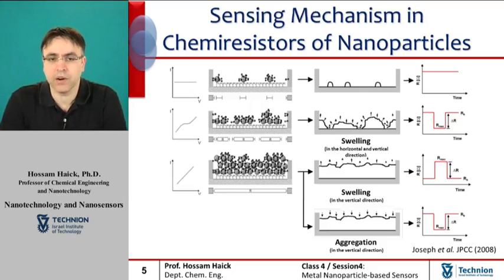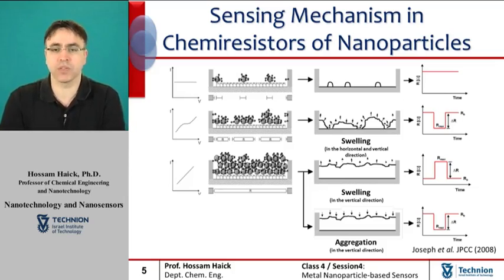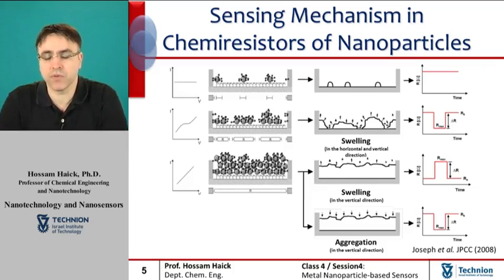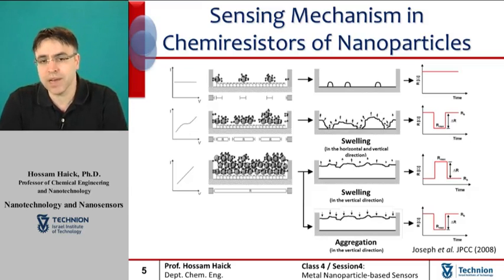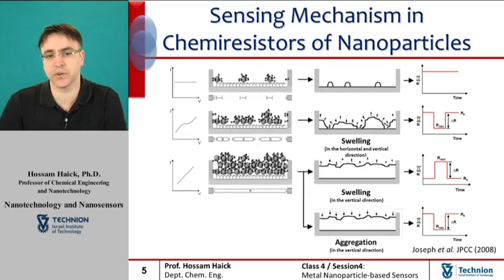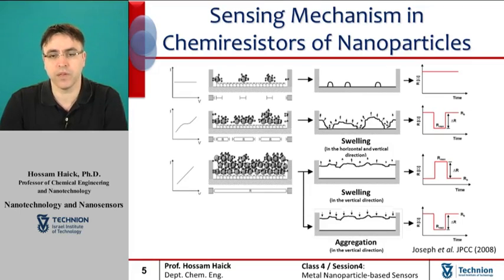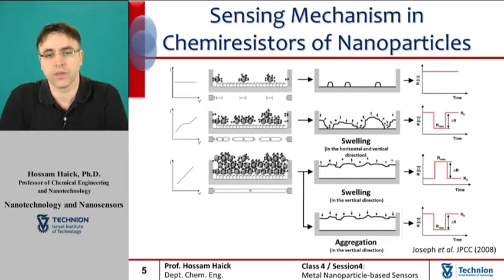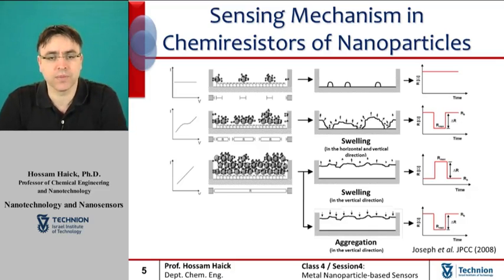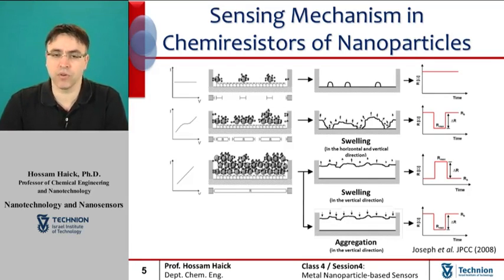Another parameter that has a critical effect on the sensing results of nanoparticle-based sensors relates to the film's morphology. We might roughly divide the morphology effect into three different scenarios. In the first scenario, the nanoparticle-based chemoresistor contains only a small number of nanoparticles, as illustrated in the upper image on the screen, with no percolation pathway connected between the electrodes. In this case, there is no direct linkage between adjacent nanoparticles, and therefore no current passes through the nanoparticles from one electrode to the other, resulting in very high resistance and poor response to analytes.